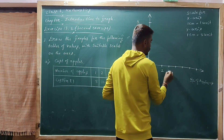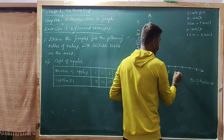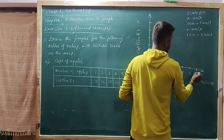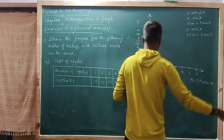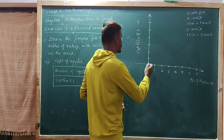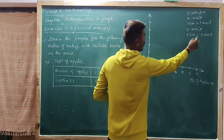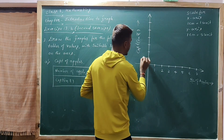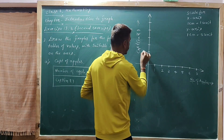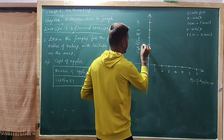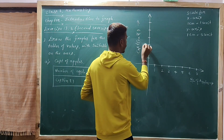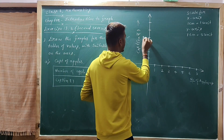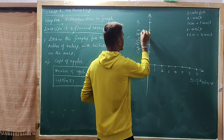Now mark the values: 1, 2, 3, 4, 5, 6, 7 on the x-axis. For rupees on the y-axis, since 1 centimeter equals 5 units: 5, 10, 15, 20, 25.